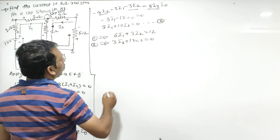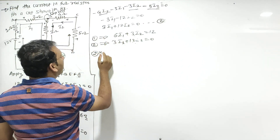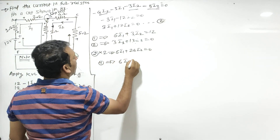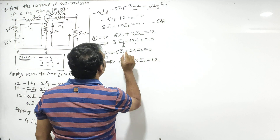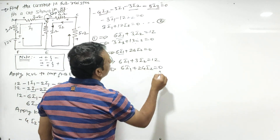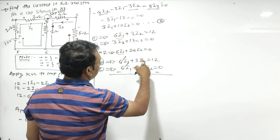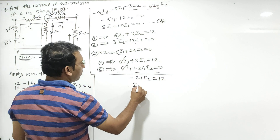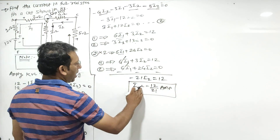अब दोनों equations की तरफ देखो — दोनों के factors मिल रहे हैं। Equation number 2 को multiply by 2 करो — 6 I1 plus 24 I2 is equals to 0. Equation 1: 6 I1 plus 3 I2 is equals to 12. Simultaneous equation — subtract करो — 6 I1 cancel, 24 minus 3 यानी minus 21 I2 is equals to 12. So I2 is equals to minus 12 by 21 ampere — यह I2 का पहला जवाब मिला।